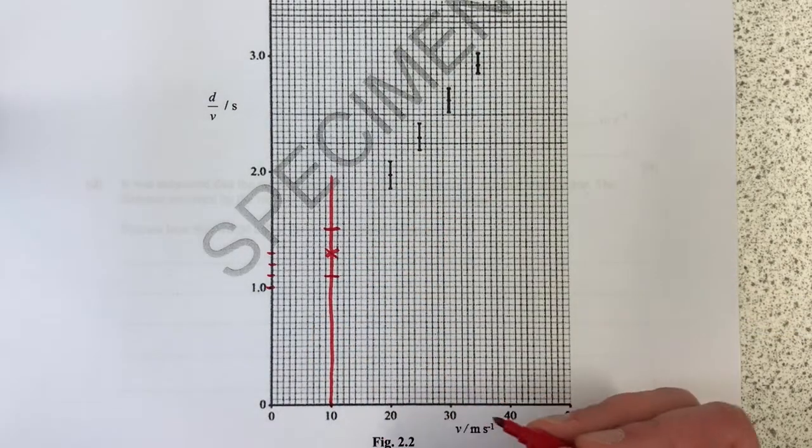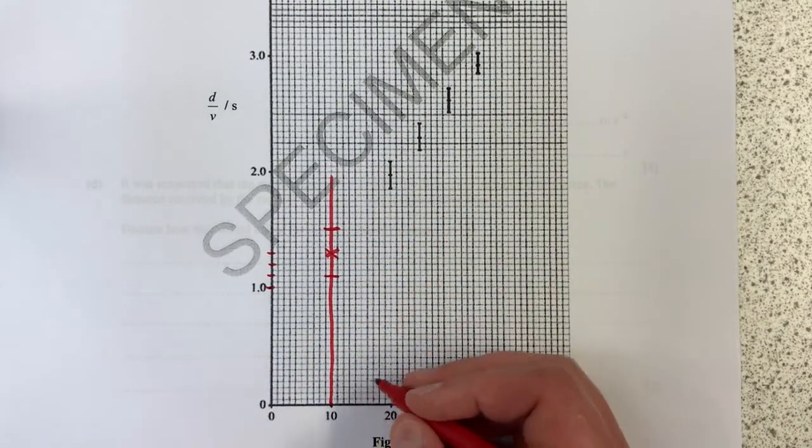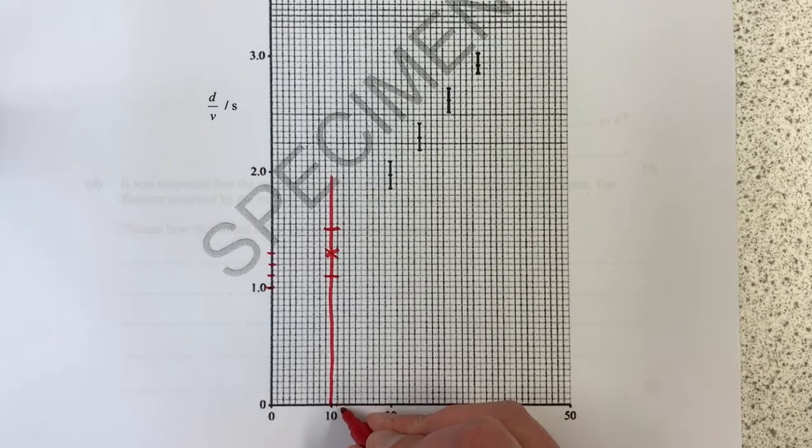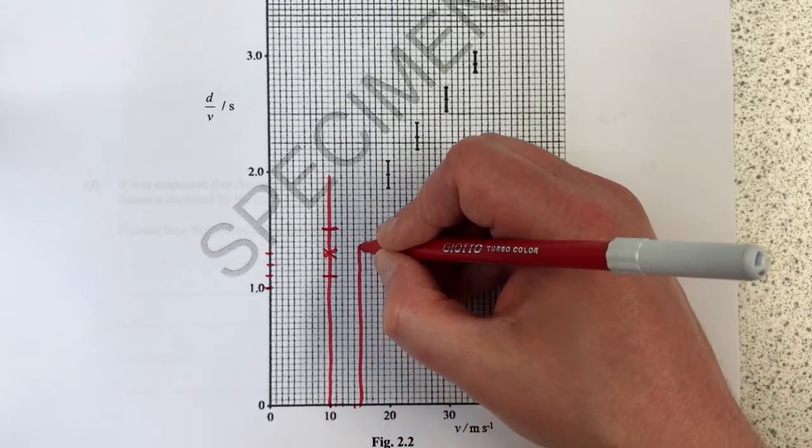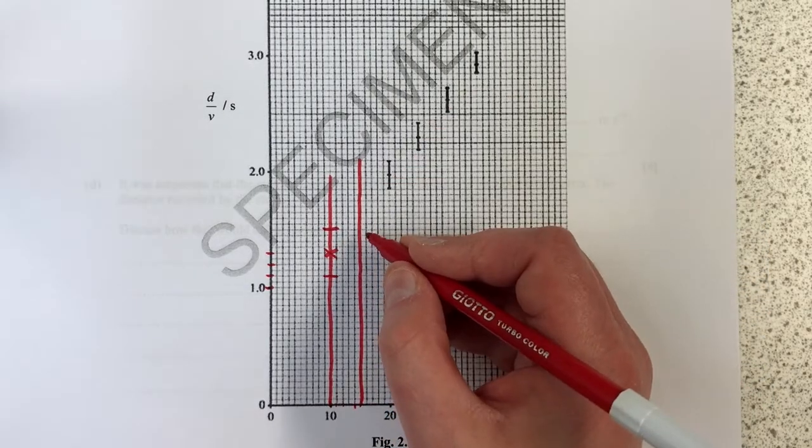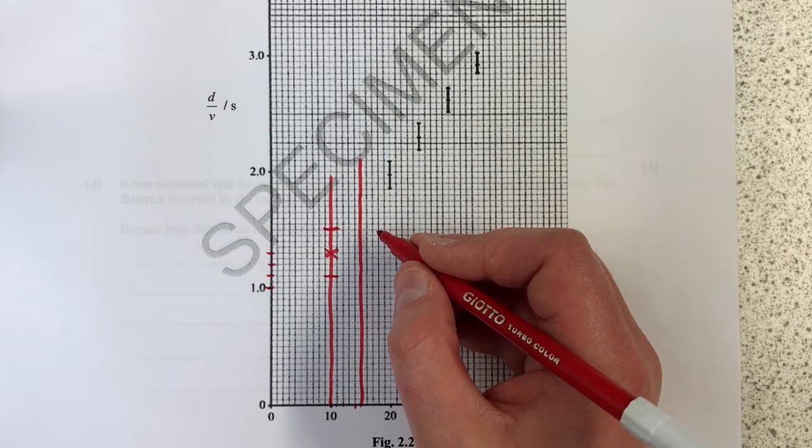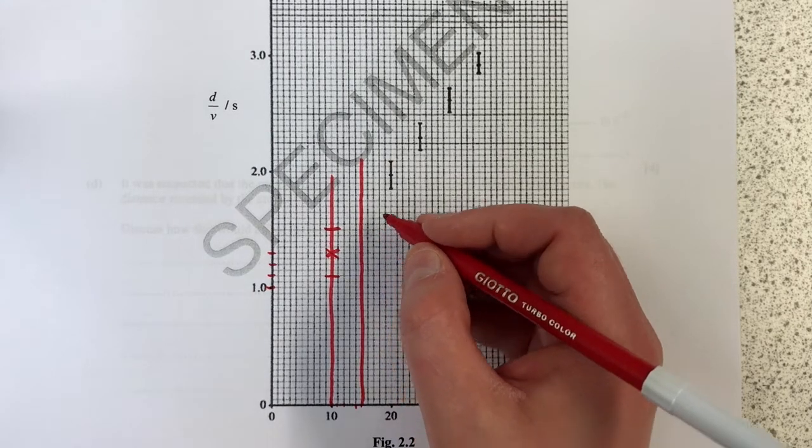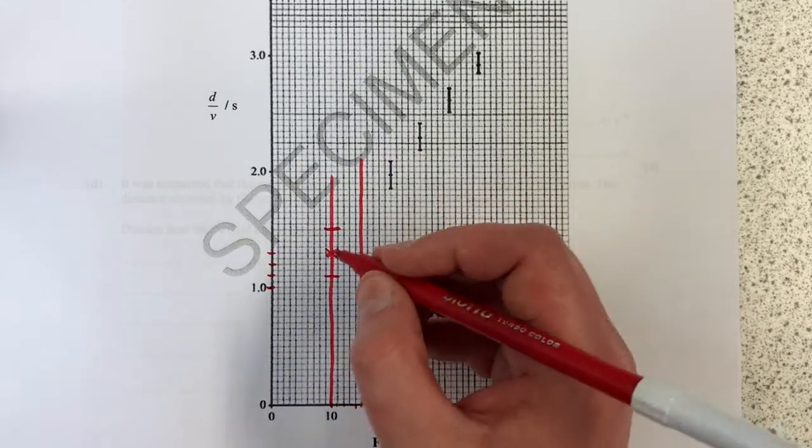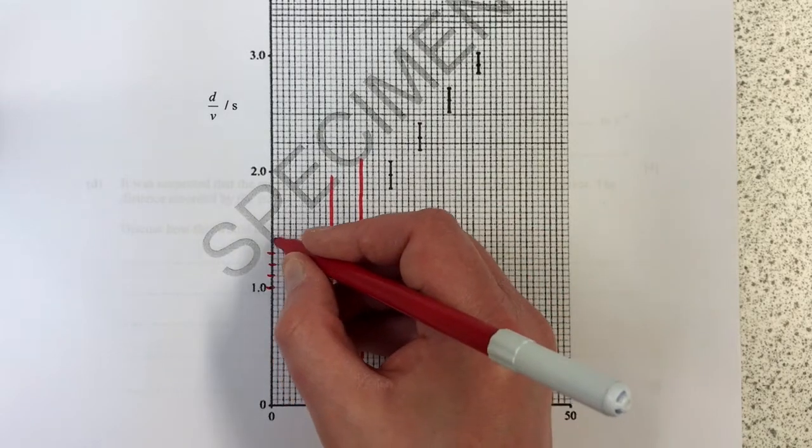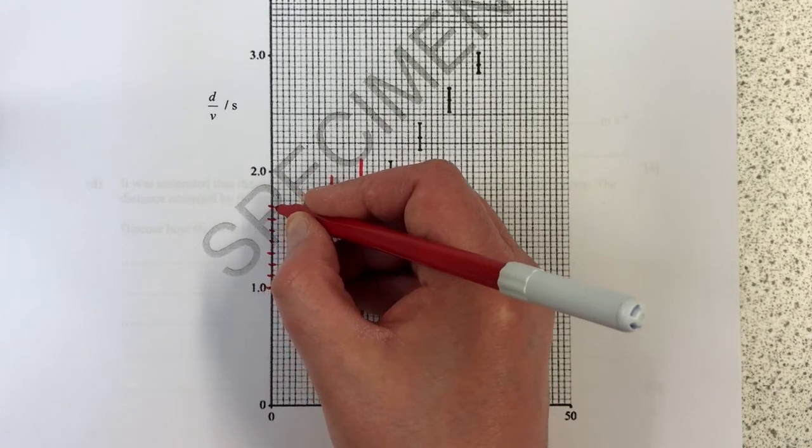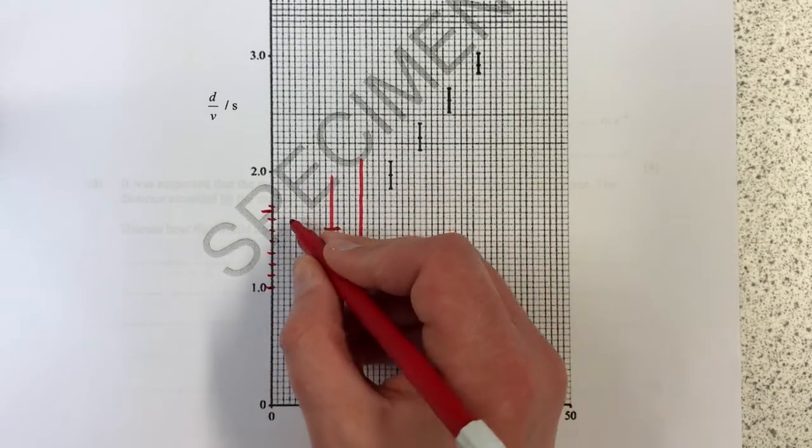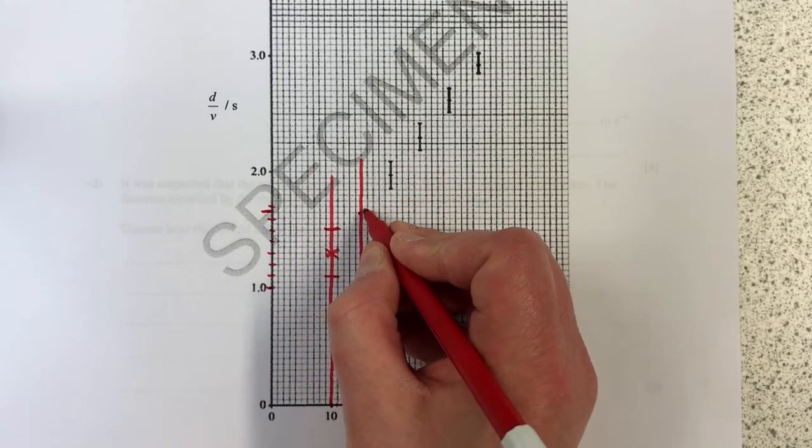Now I need to do the same for the velocity 15. So 10, 11, 12, 13, 14, 15, here's my 15 line going all the way up. Now I'm only doing this because the graph is so terrible, and I need to level that off at 1.63.